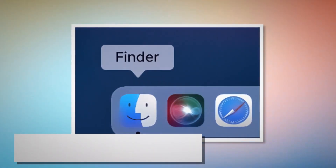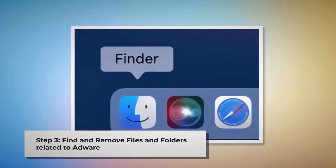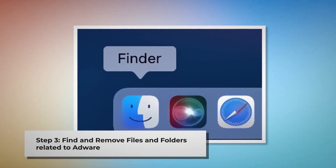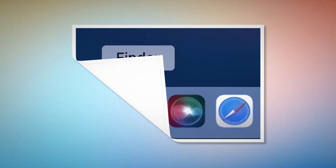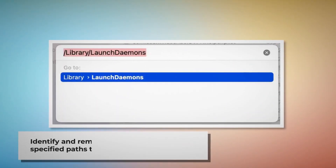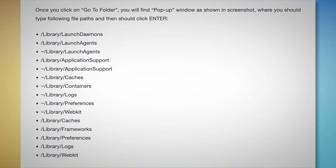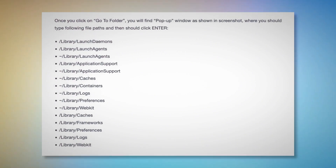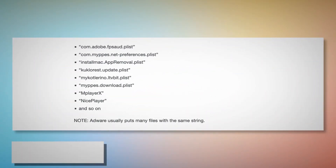Step 3: Find and Remove Files and Folders Related to Adware. Make sure you are in the Finder folder. Once you are in the Finder folder, click on Go at the top menu bar of your Mac and then Go to Folder on the drop-down menu, as shown in the screenshot. You will find a pop-up window where you should type these file paths and then click Enter: Library, LaunchAgents, LaunchDaemons, Application Support, and so on, as shown here. You should look for suspicious malicious files and move them to Trash. A few examples of such malicious files are shown here.